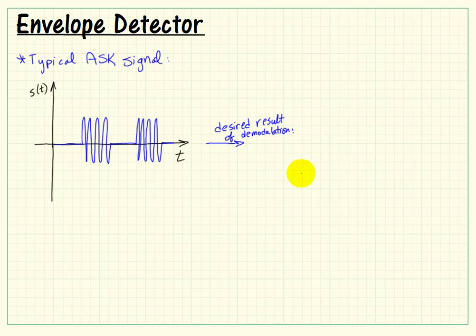Now the desired result of our demodulation process is to be able to detect whether or not the signal is a zero or a one, with one corresponding to these places where we have the carrier getting through.